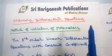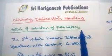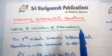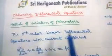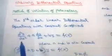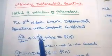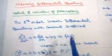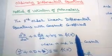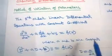Ordinary differential equations — method of variation of parameters. The second order linear differential equation with constant coefficients is d²y/dx² + a(dy/dx) + by = f(x), where a and b are constants. The differential equation can be rewritten as: